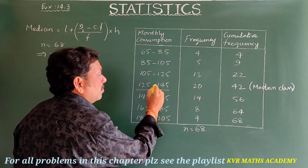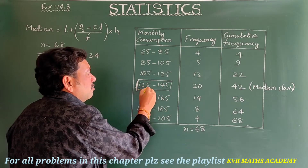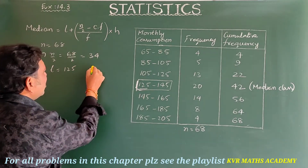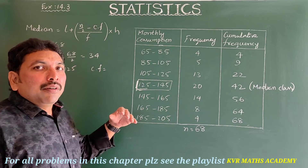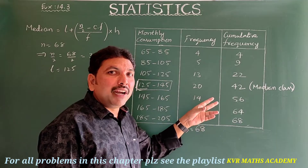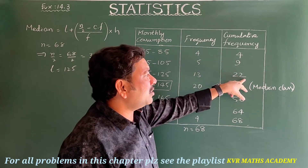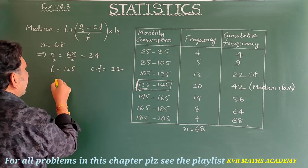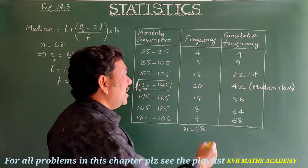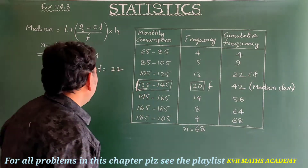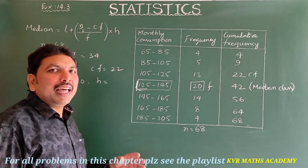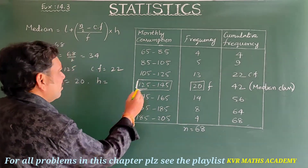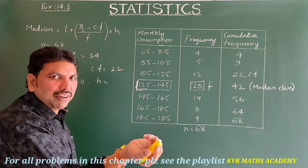In the median class, L is the lower boundary, which is 125. The cumulative frequency cf is the preceding cumulative frequency of the median class, which is 22. The frequency f of the median class is 20. H is the size of the class interval: 145 − 125 = 20.